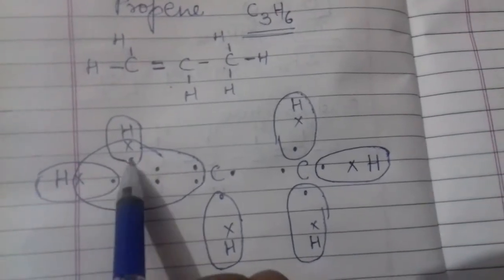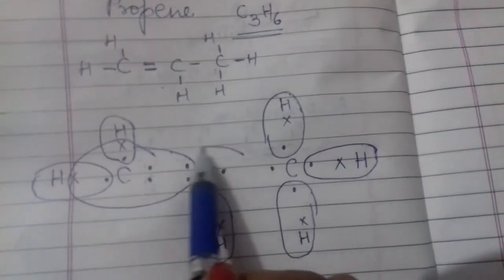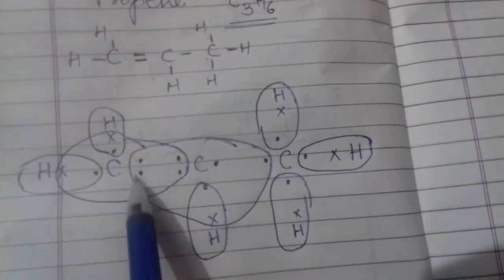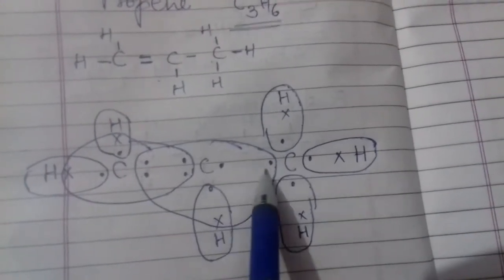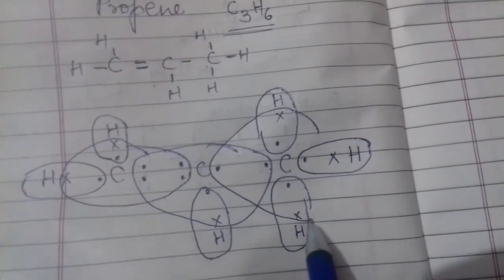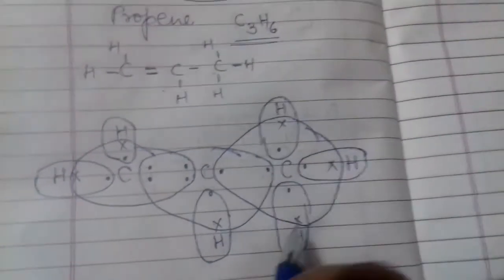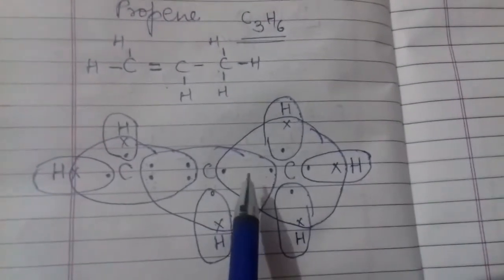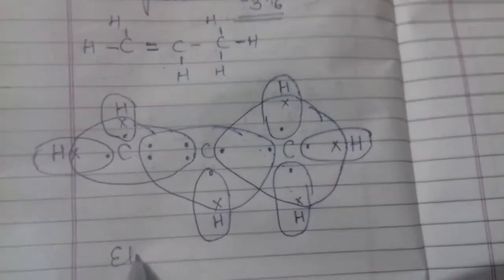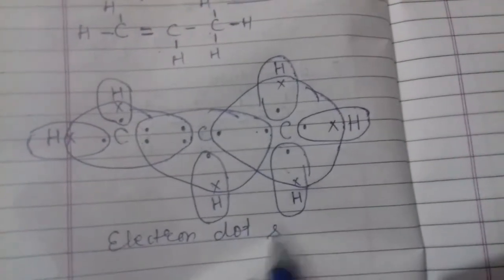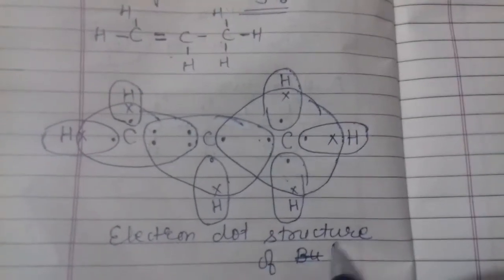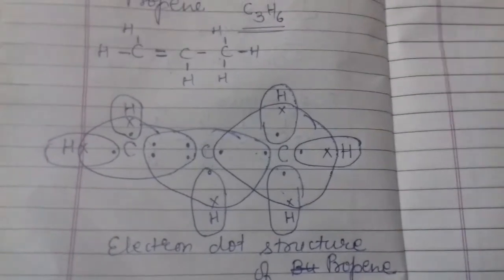इस तरीके से 8 हो गए - पहले carbon का octet complete हो गया। यह carbon पीछे वाले carbon से 2 electron, नीचे hydrogen से 1 electron और आगे वाले carbon से 1 electron share करेगा, total 8 electron होंगे। ऐसे ही यह वाला carbon - ऊपर hydrogen से, पीछे की तरफ carbon से, नीचे की तरफ hydrogen से, और आगे वाले hydrogen से 1 electron share करेगा, total 8 electron हो जाएंगे। इस तरीके से हमने propene का electron dot structure बनाया - carbon 3 थे।